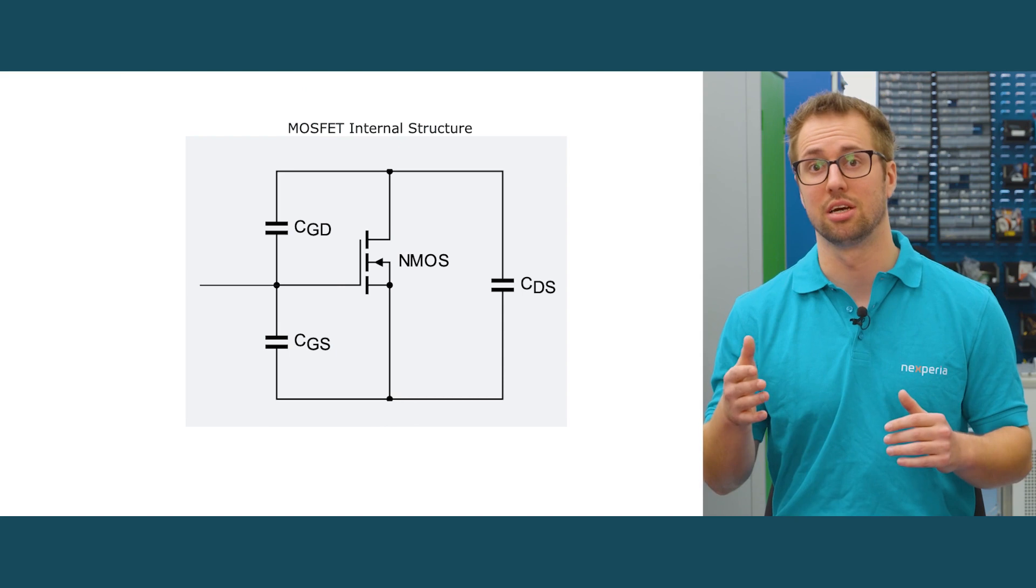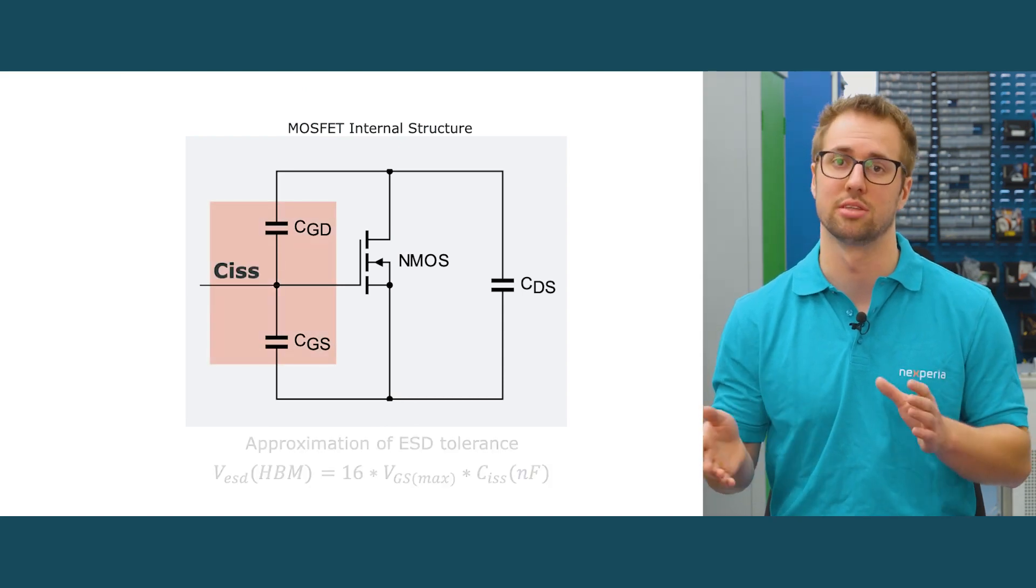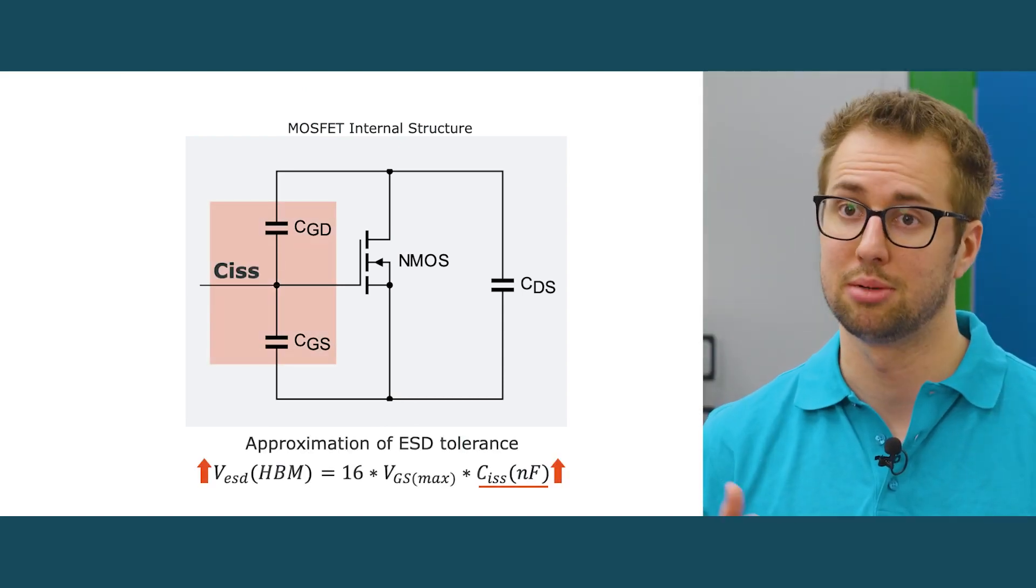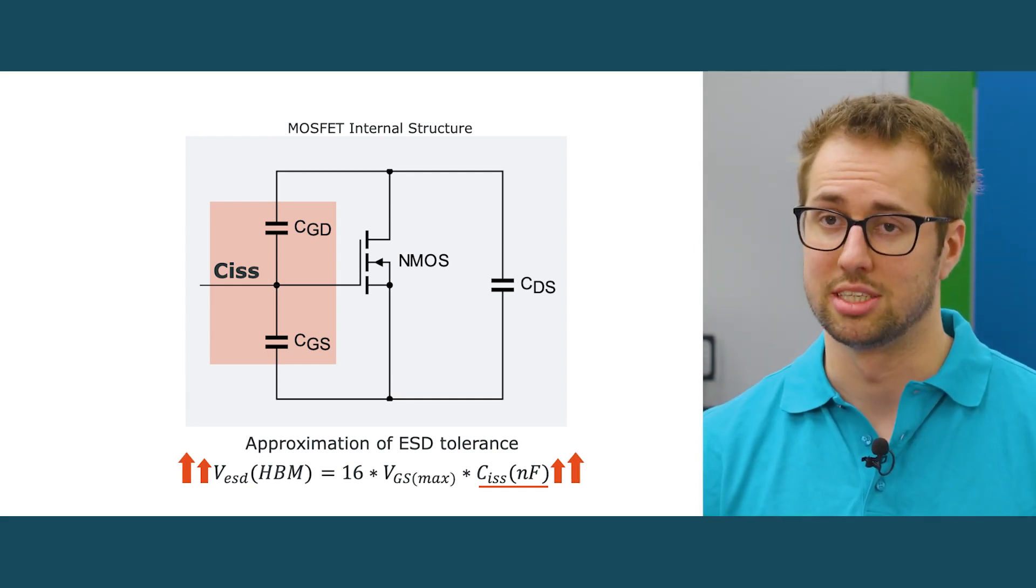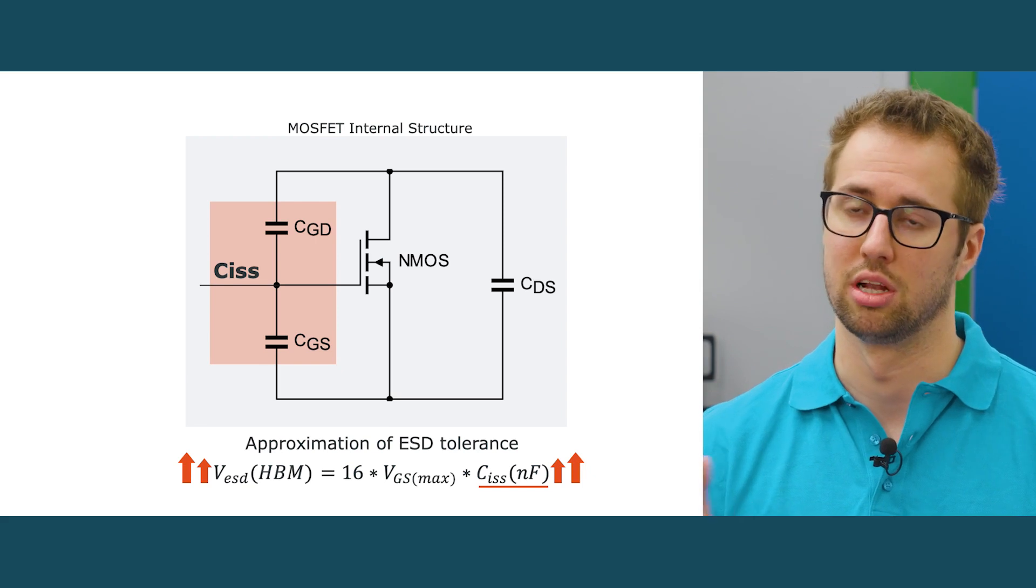Generally, power MOSFETs tend to have a higher CISS parameter and good gate oxide quality. The higher CISS parameter helps reduce the sensitivity to ESD events, and this means that the devices are inherently protected to one to two kilovolts.